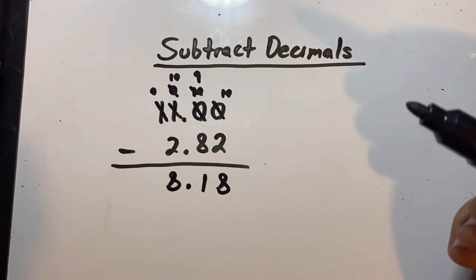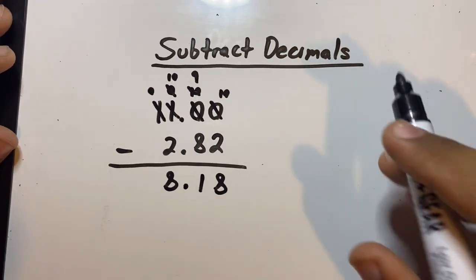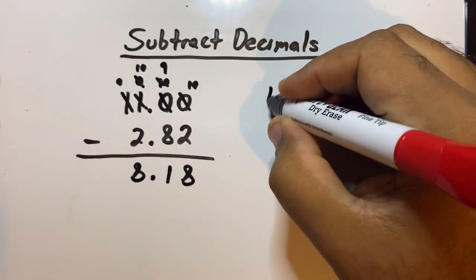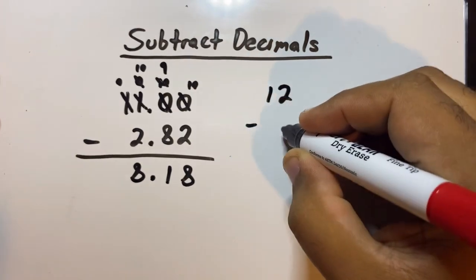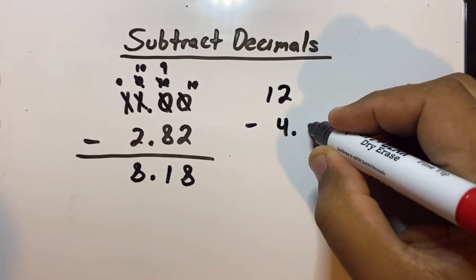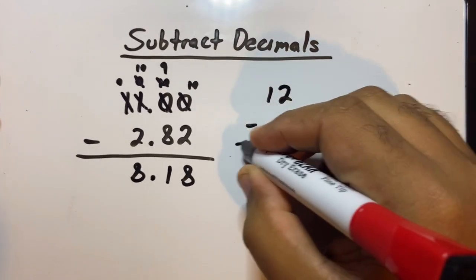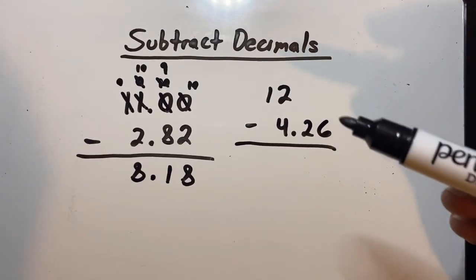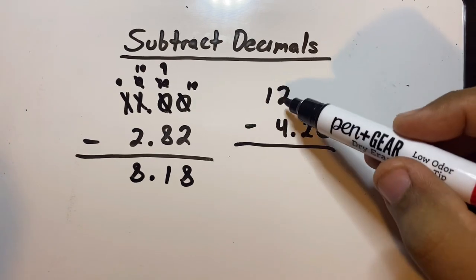Okay, just like with addition, here's the last question for now. What if we just have a whole number, 12 minus 4.26? There's no decimal point. Don't panic if you don't see a decimal point, it's all right.